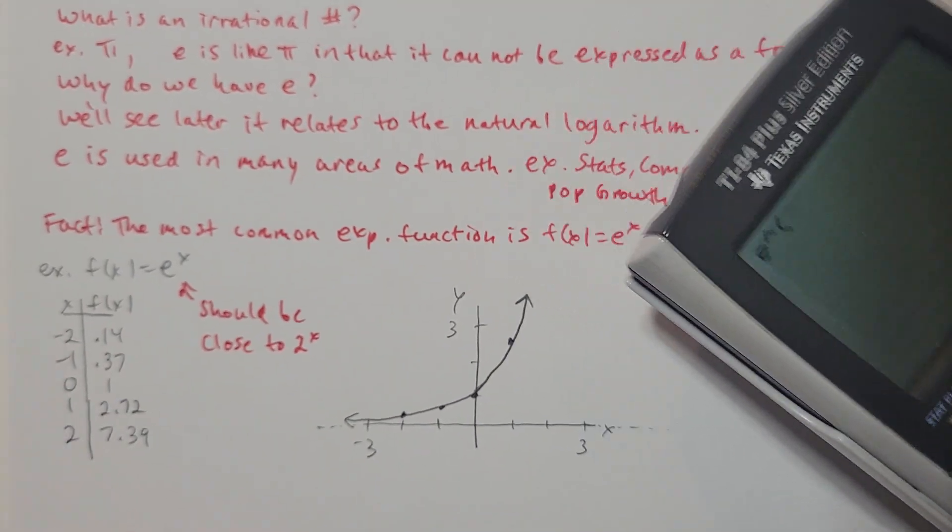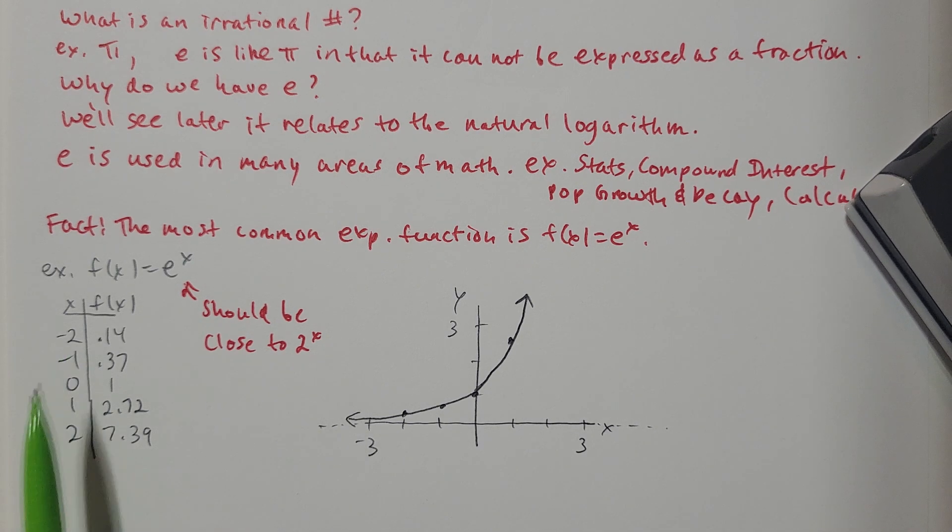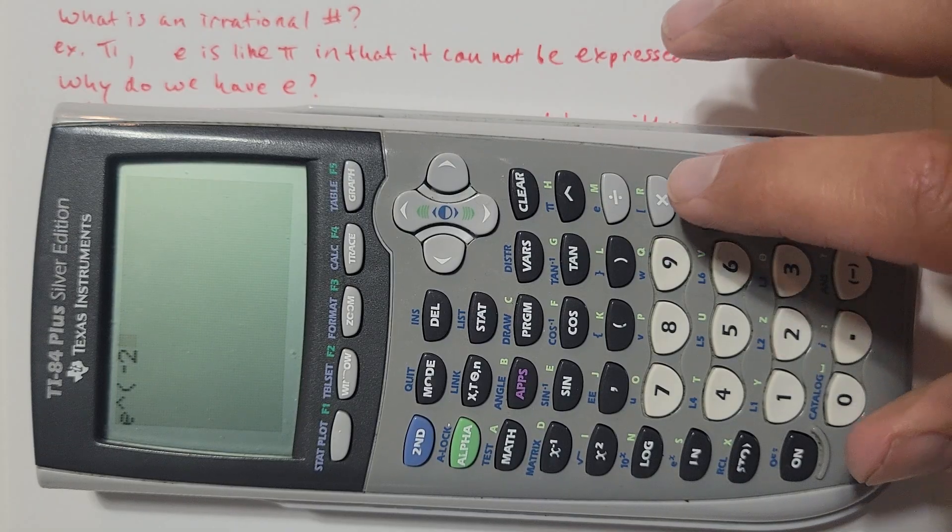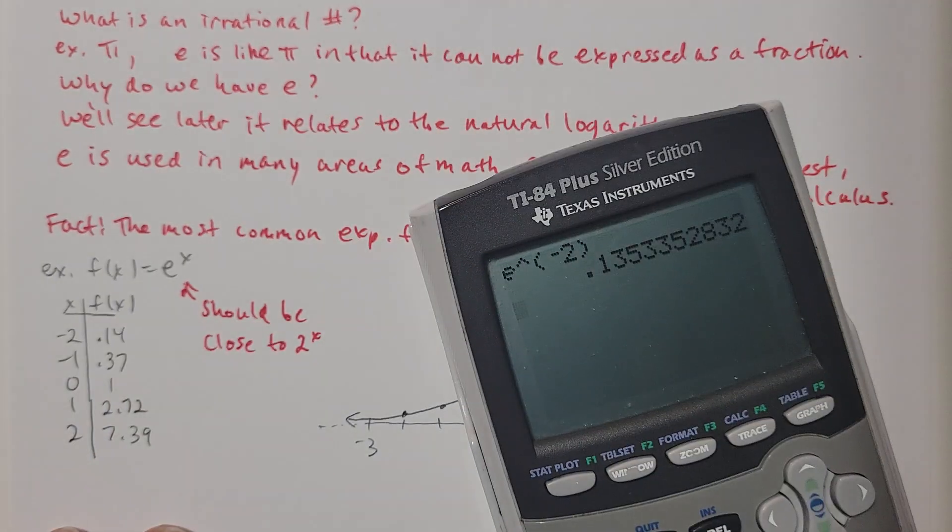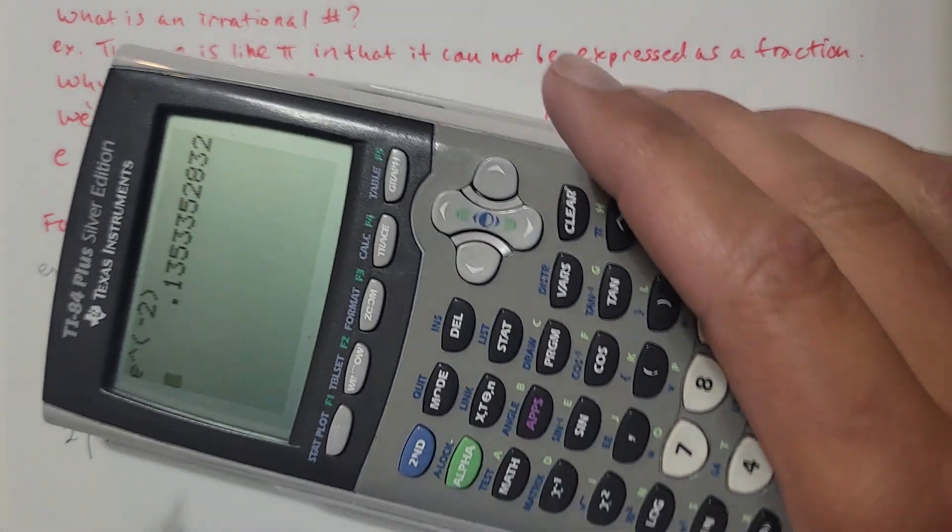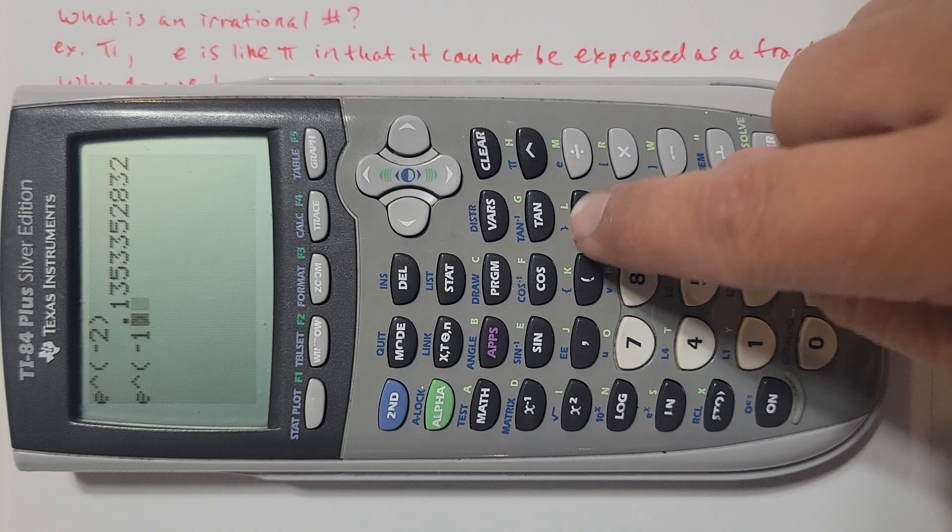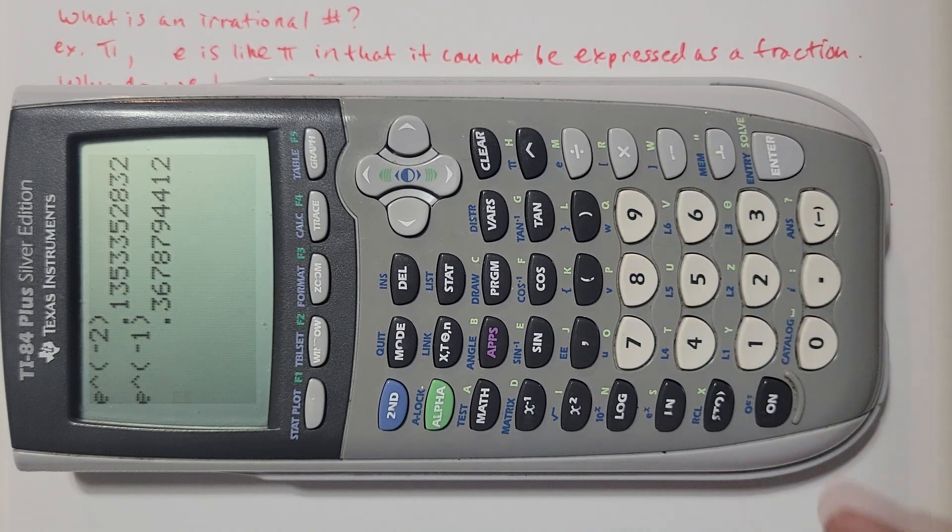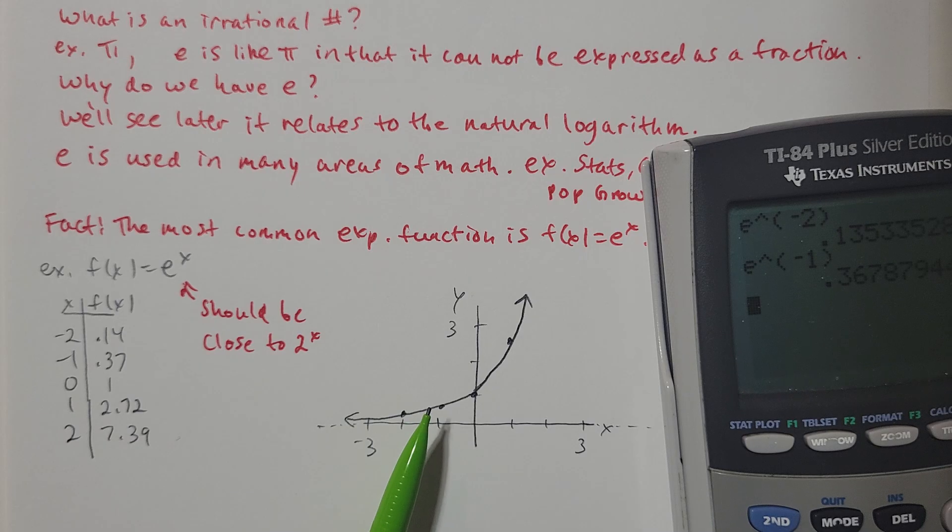We use a table of numbers. I can let x be anything I want here when I'm graphing this. So like if I let x be negative 2, e to the negative second power is about 0.14 is what I'm getting there. So that'd be the y value. So the point negative 2, 0.14, that point would be on this curve. What if I let x be negative 1? e to the negative first power is 0.37 is what I'm getting. So negative 1, 0.37, that's going to be a little bit higher than the previous point there. Go ahead and plot that point.